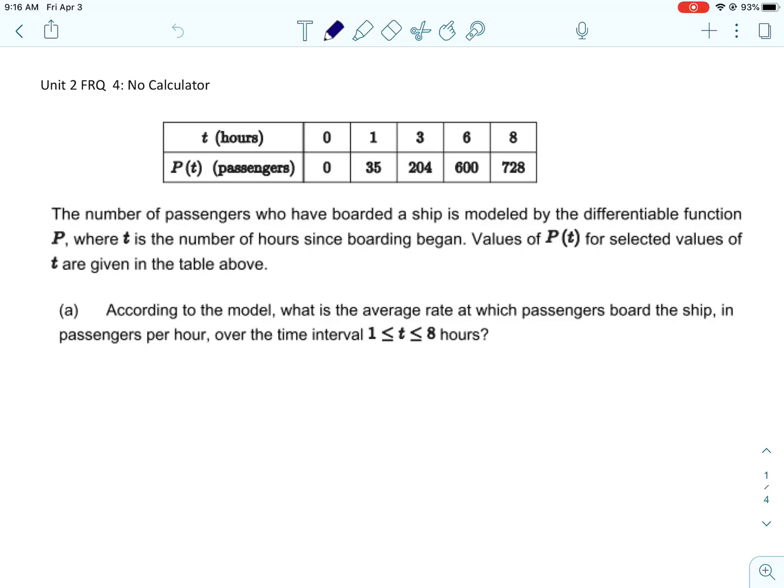Alright, the last free response question in unit 2 is a non-calculator question. We're going to see some of the same things that we saw in the other ones, but there'll also be a little added extra. So we have a table that represents P of t, and P of t is the number of passengers who have boarded a ship. It is differentiable. T is the number of hours since boarding began.